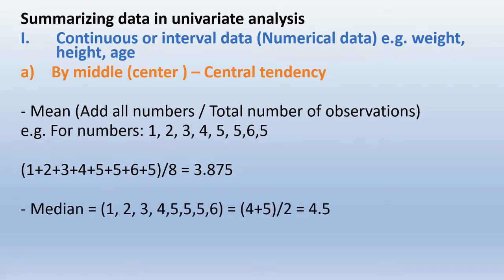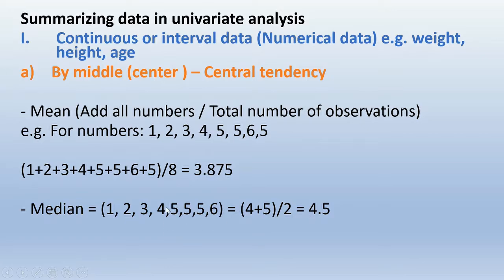Median is the number which is in the middle. You first sort by ascending order and try to determine which number is in the middle. By canceling out one from the left and one from the right, you remain with 4 and 5 in the middle, so you get the average — 4.5 is the median for this data.